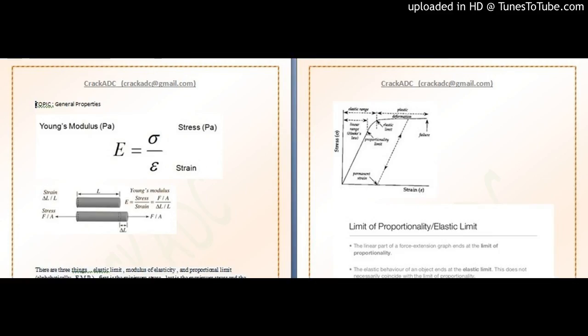Flexibility determines the undercut needed for the RPD, so Young's modulus is also inversely proportional to the undercut needed. It is also inversely proportional to the proportional limit, a term we will define later. Remember: Young's modulus is directly proportional only to rigidity; to all other things you come across, it will be inversely proportional.